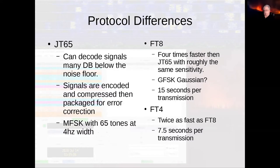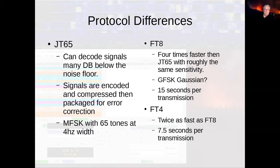FT8 uses Gaussian frequency shift keying — I encourage you to look that up. It's 15 seconds per transmission each way: you send for basically 12 and a half seconds, two and a half seconds to decode, then they send back. FT4 is twice as fast at seven and a half seconds per transmission. I've played with FT4 a few times, but the faster it is, the fewer contacts I'm able to make. So I pretty much hover around FT8.